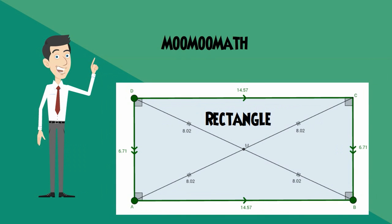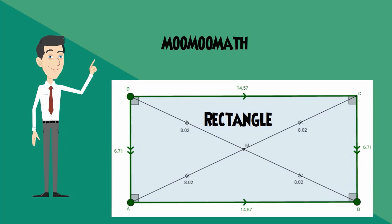Hello, welcome to MooMooMath. In this video I'd like to talk about the properties of a rectangle. A rectangle is part of the quadrilateral family, which means it is a plain shape with four sides. In addition, it has several other properties.